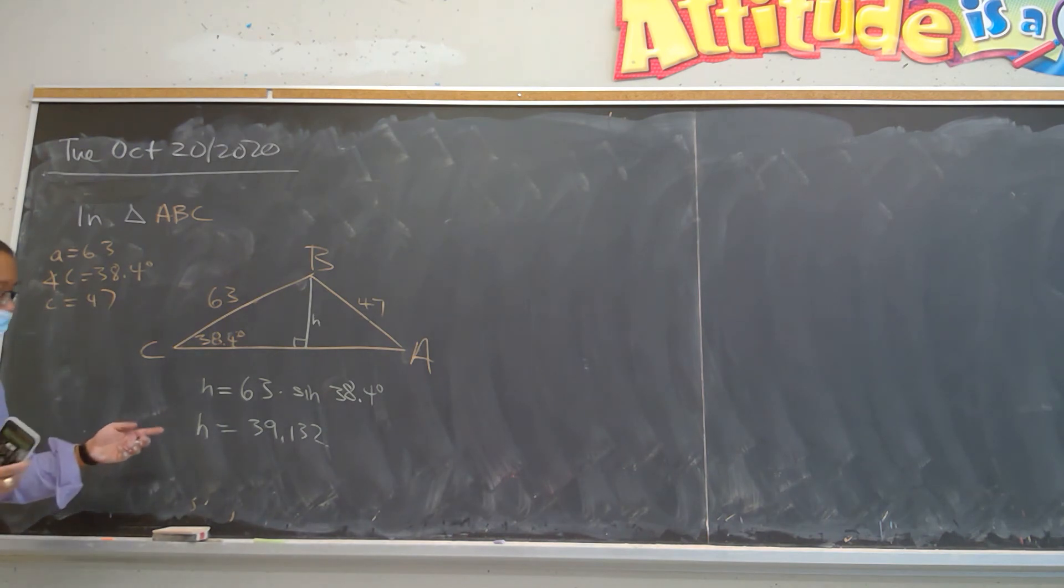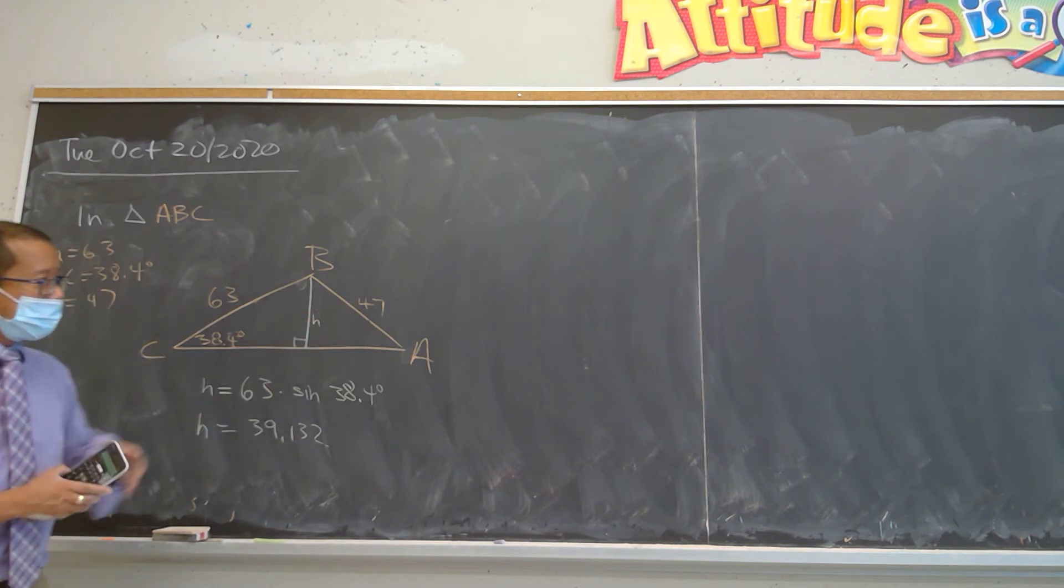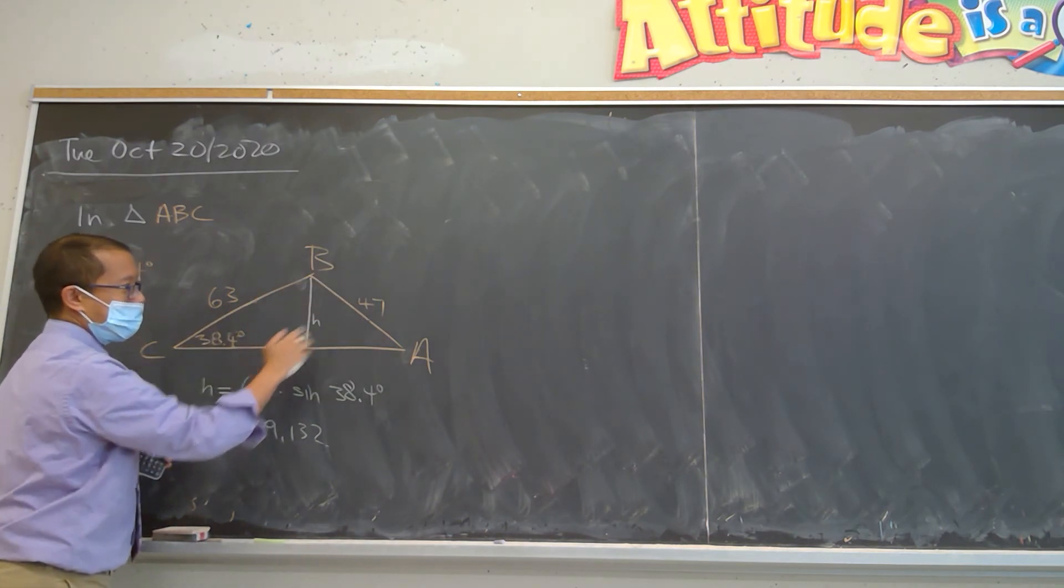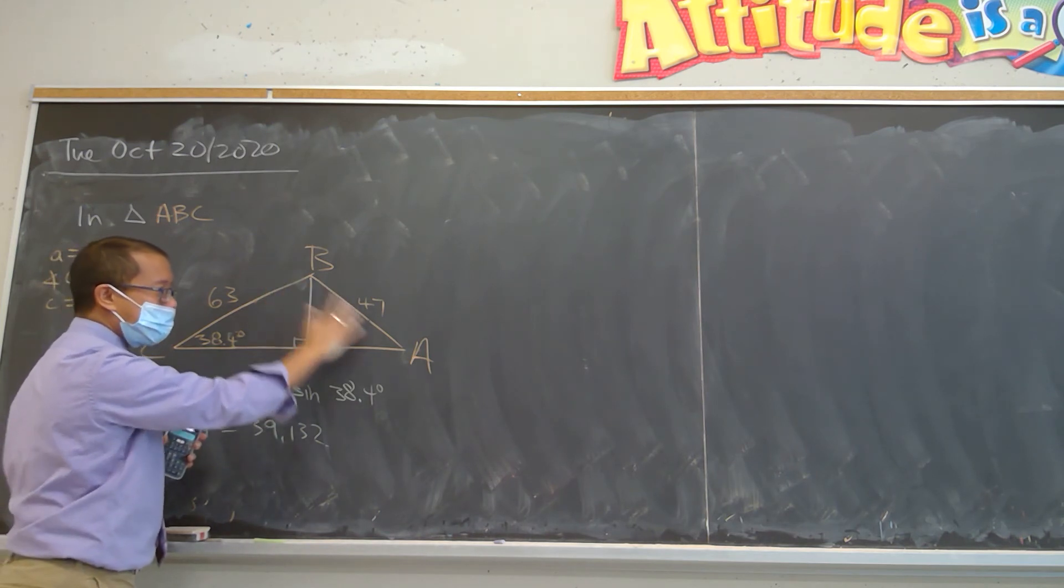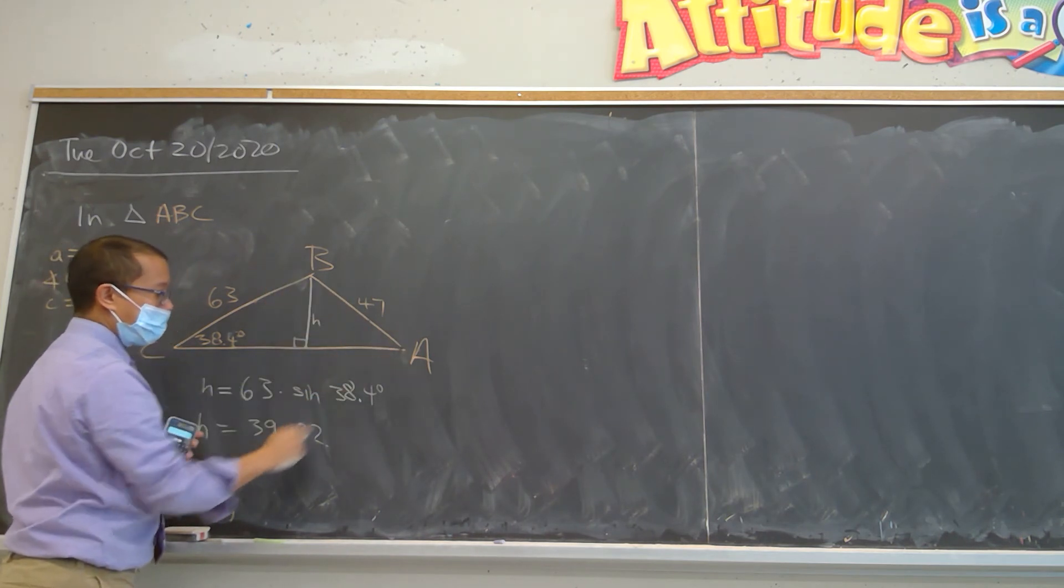And what this tells us is that the height is smaller than the 47. And if you look at this side of the triangle, it's kind of like the 47 is the hypotenuse, right? So it can exist. It does actually touch the bottom.